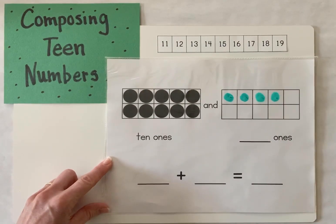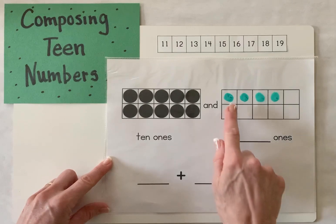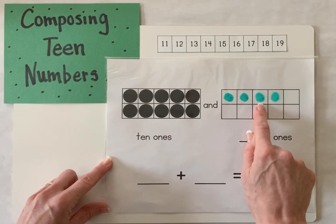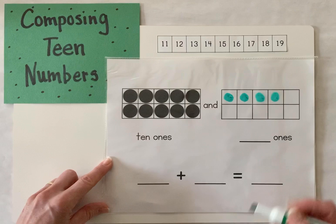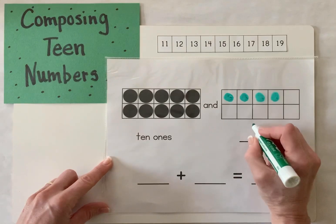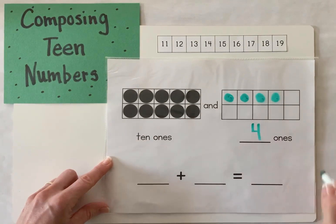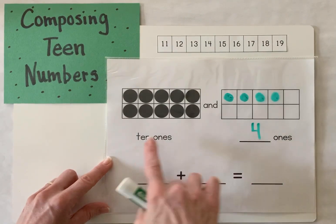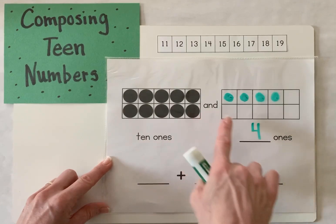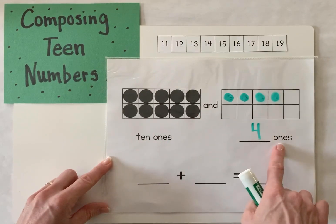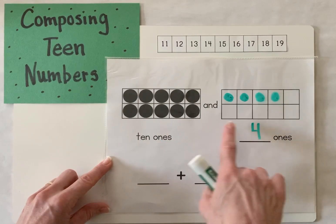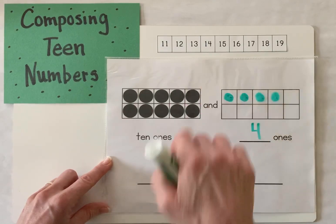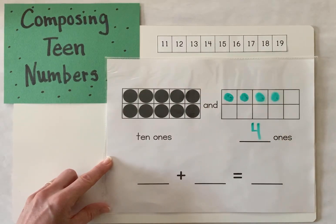Let's count how many I have: one, two, three, four. So I have four ones on this side. So 10 ones and four ones — these are the two groups that we're going to join together to compose our teen number.